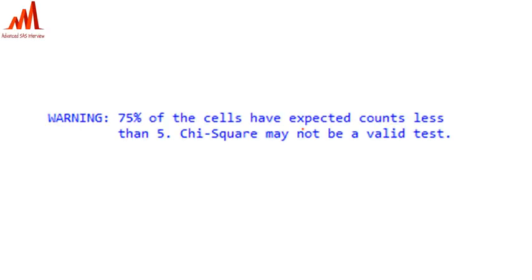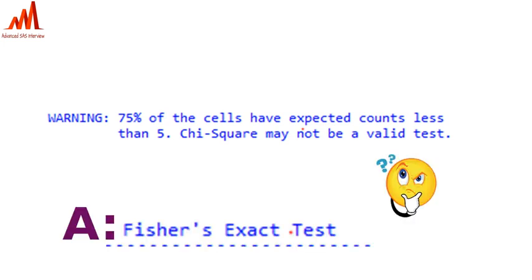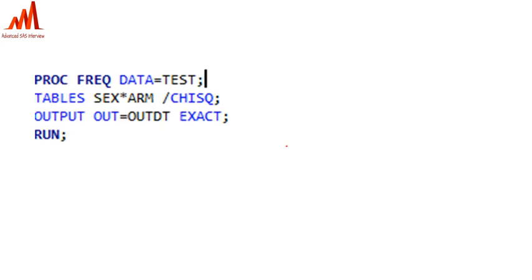However, in the output log you may get a warning: '75% of the cells have expected counts less than five — chi-square may not be valid.' If you get this warning in the log, we then use the Fisher exact test method instead of chi-square. If the statistician suggests it directly, we use the exact method; otherwise we first test with chi-square, and if it gives an error or warning, we switch to Fisher exact for two-by-two responses.